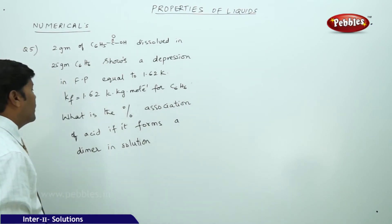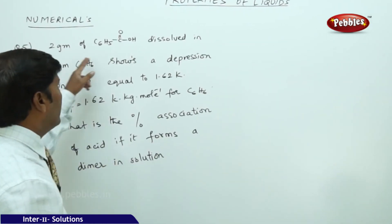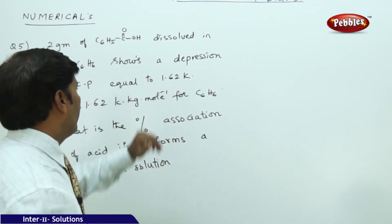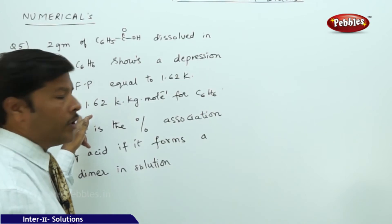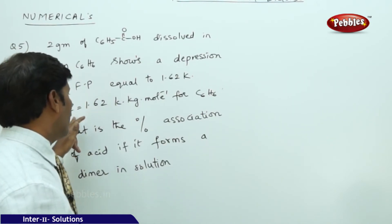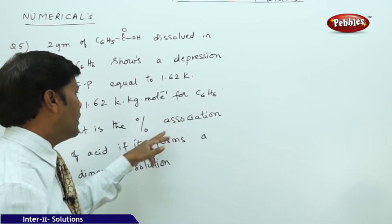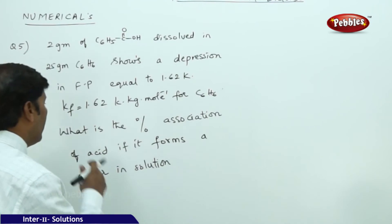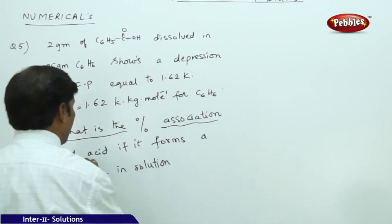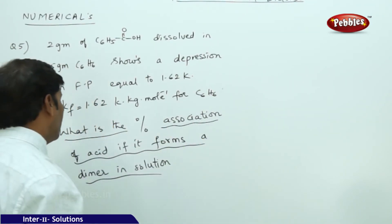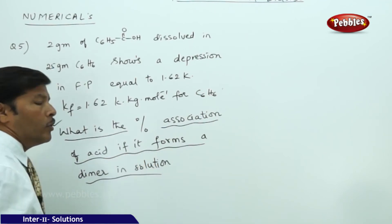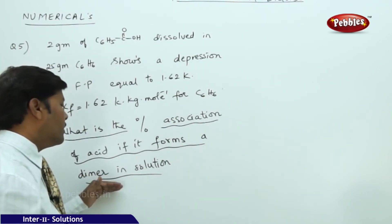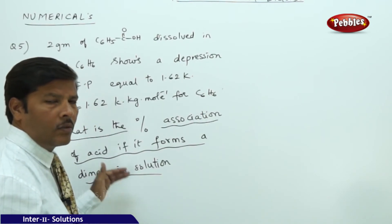The next problem: 2 grams of benzoic acid dissolved in 25 grams of benzene shows a depression in freezing point of 1.62 K. The cryoscopic constant Kf for benzene = 4.92 K·kg/mol. What is the percentage association of the acid if it forms a dimer in solution? This problem involves benzoic acid undergoing dimerization — 2 monomers associate to form one dimer.